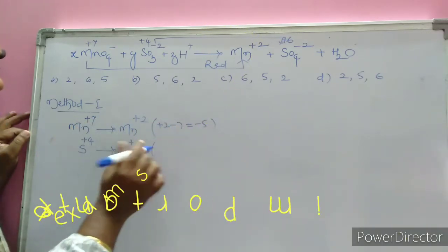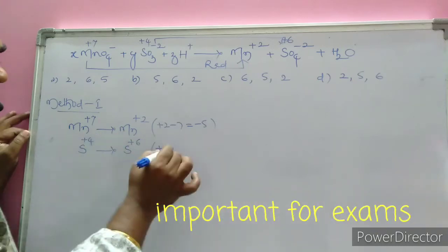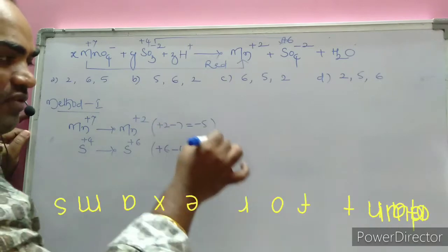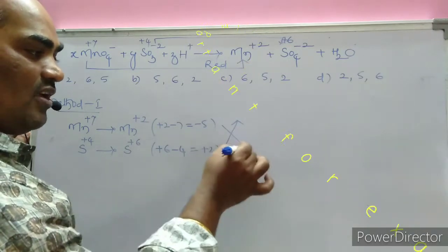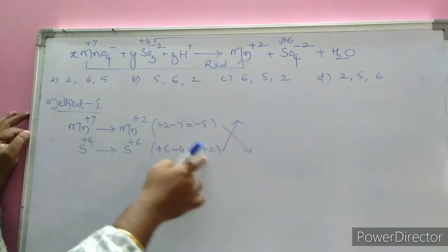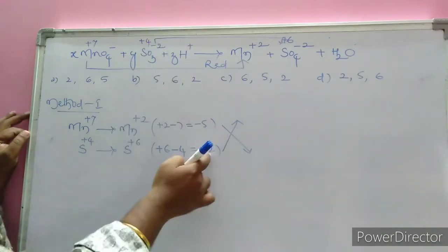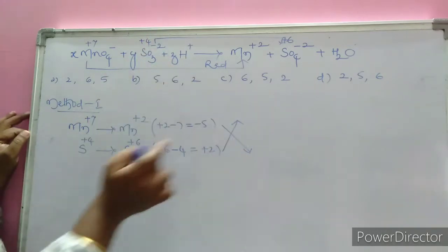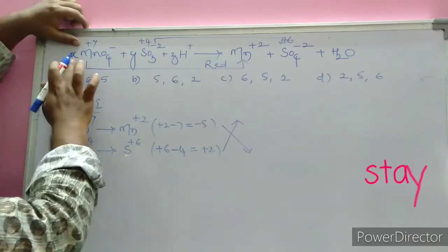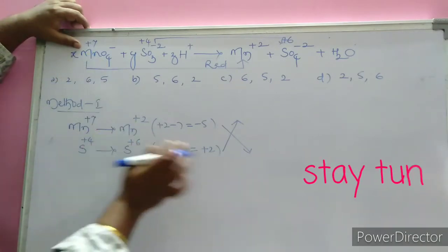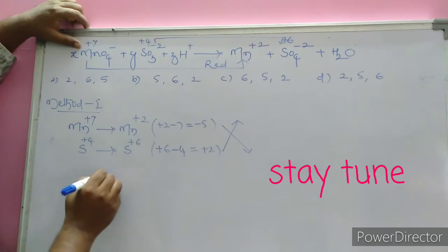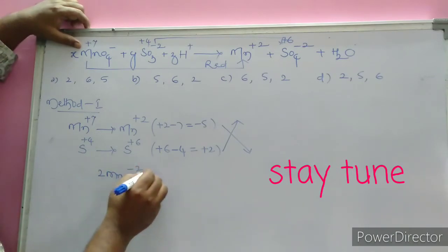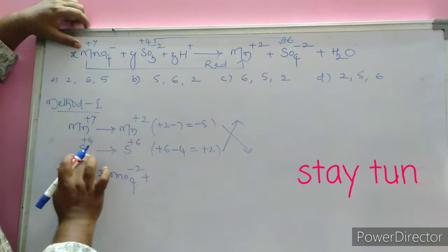The change for manganese: +2 minus 7 equals minus 5. The change for sulfur: +6 minus +4 equals +2. Irrespective of the magnitude of the charges, I am multiplying oppositely (cross-multiplying). The coefficient of manganese in the equation is 2, and the coefficient of sulfur is 5.